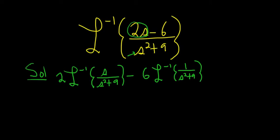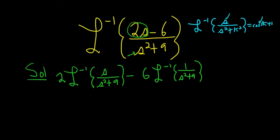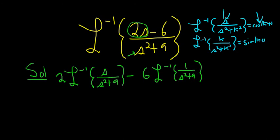There are two formulas we need for this problem. The first is that the inverse Laplace of s over (s squared plus k squared) equals cosine of kt. The way I memorize it is: cosine has the s. And then the inverse Laplace of k over (s squared plus k squared) equals sine of kt. So if you remember that cosine has the s, then sine has the k.